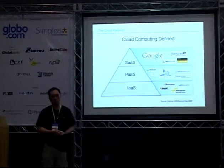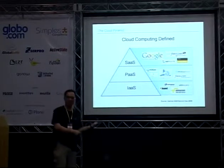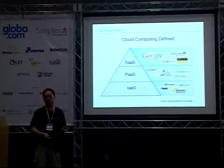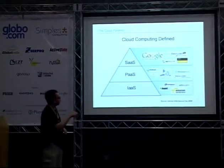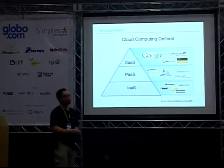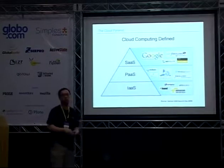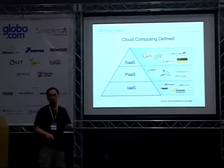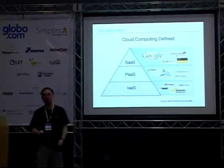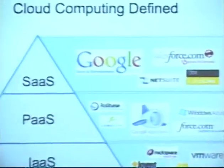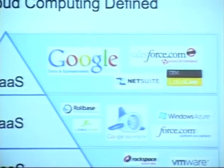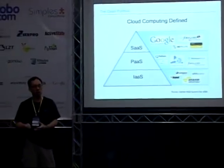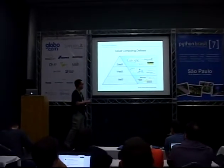In the middle is Platform as a Service — I think it's the most powerful one. You don't have to worry about all the infrastructure stuff: operating system, database, web server — those are taken care of for you. But it's more powerful than SaaS because you control the app — you build it and run it. You actually use PaaS to write SaaS apps. That's where App Engine fits, along with Force.com and Microsoft Azure.